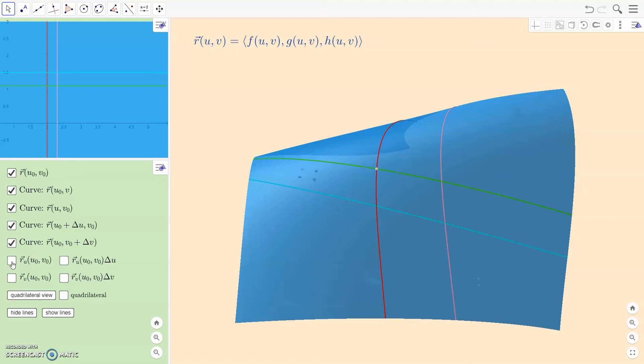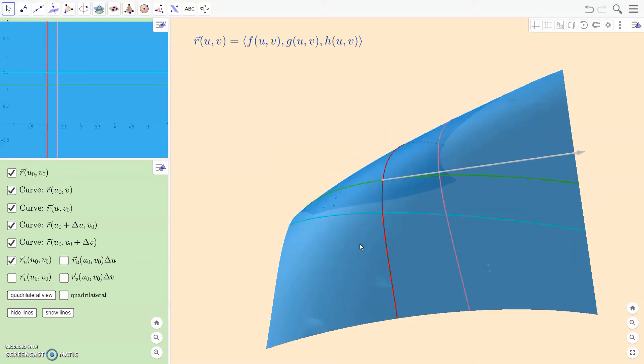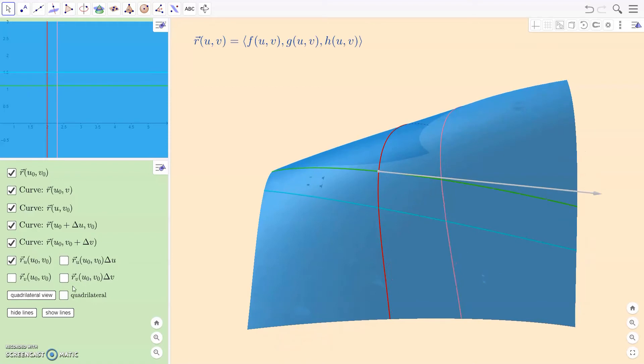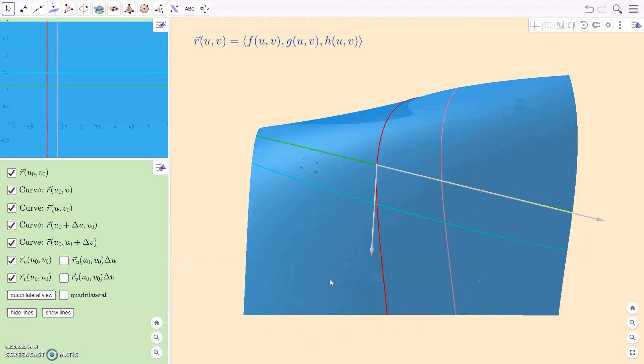So if we think that the only thing changing along the green curve is the parameter U, it's really a curve parameterized by a single parameter U. And its derivative with respect to U, that is a partial derivative, would actually be a vector tangent to the green curve there. So that white vector is tangent to the green curve, and actually this white curve here is tangent to the red curve.